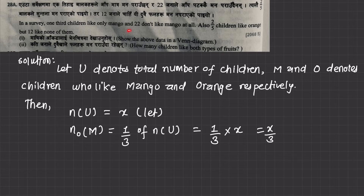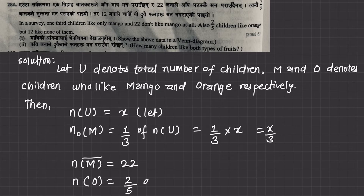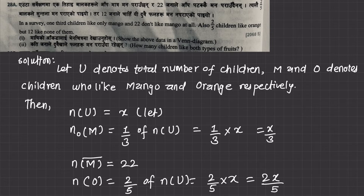22 do not like mango at all — that is, the complement of mango is 22. Also, two by five like only orange. The number of only orange is two by five of U, which equals 2X by 5.